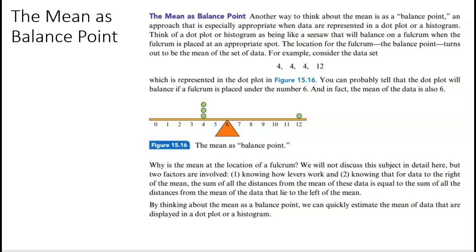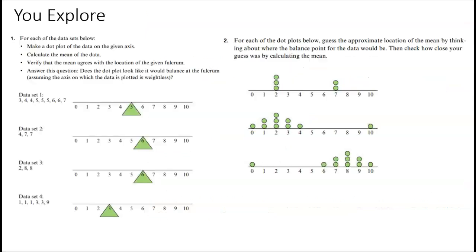Another way to think about the mean is the balancing point. This is really appropriate with dot plots or histograms. Think of a dot plot as like a seesaw that balances on a fulcrum when the fulcrum is placed at an appropriate spot. If you have three dots over here and one over here, you're not going to place it over here—it's going to go way up, right? So we want to place it where it's going to balance it. You can probably tell that the dot plot will balance if a fulcrum is placed under the number 6, and the mean is also at 6. Why is the mean at the location of a fulcrum? We're not going to go into too much detail here, but basically it's how levers work. For data to the right of the mean, the sum of all the distances from the mean equals the sum of all the distances from the mean of the data to the left. By thinking of it as a balance point, we can quickly estimate the mean. It's looking at the distance from each other, from the mean. Explore it a little more in this exploration, and then press play when you're ready to move on.